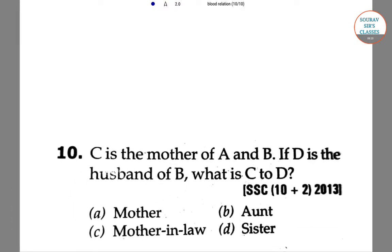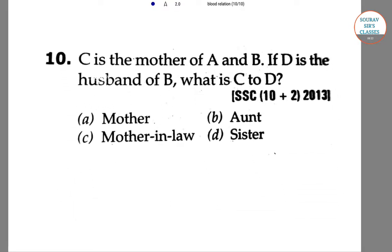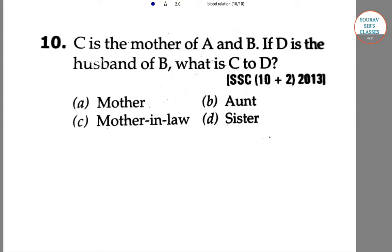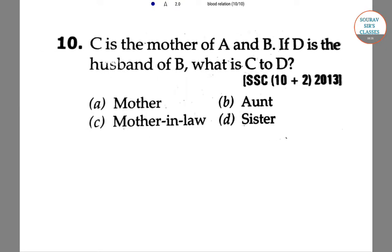In the next question: C is the mother of A and B. If D is the husband of B, then what is the relation of C to D? A is the sister of B. B and D are a couple.